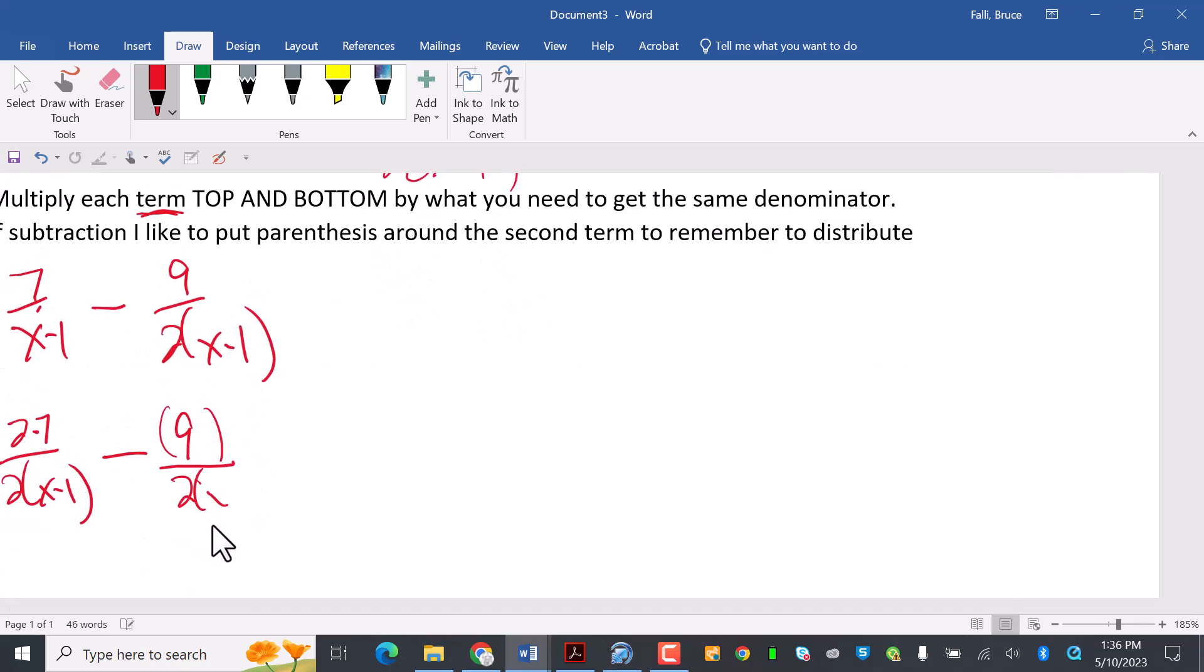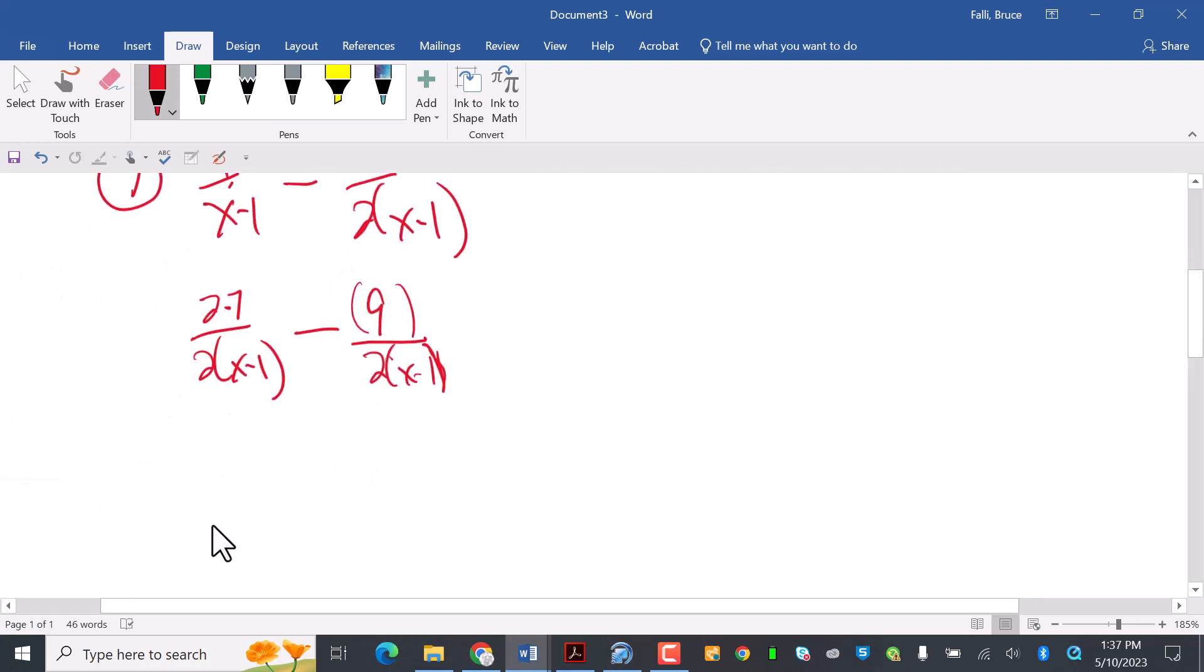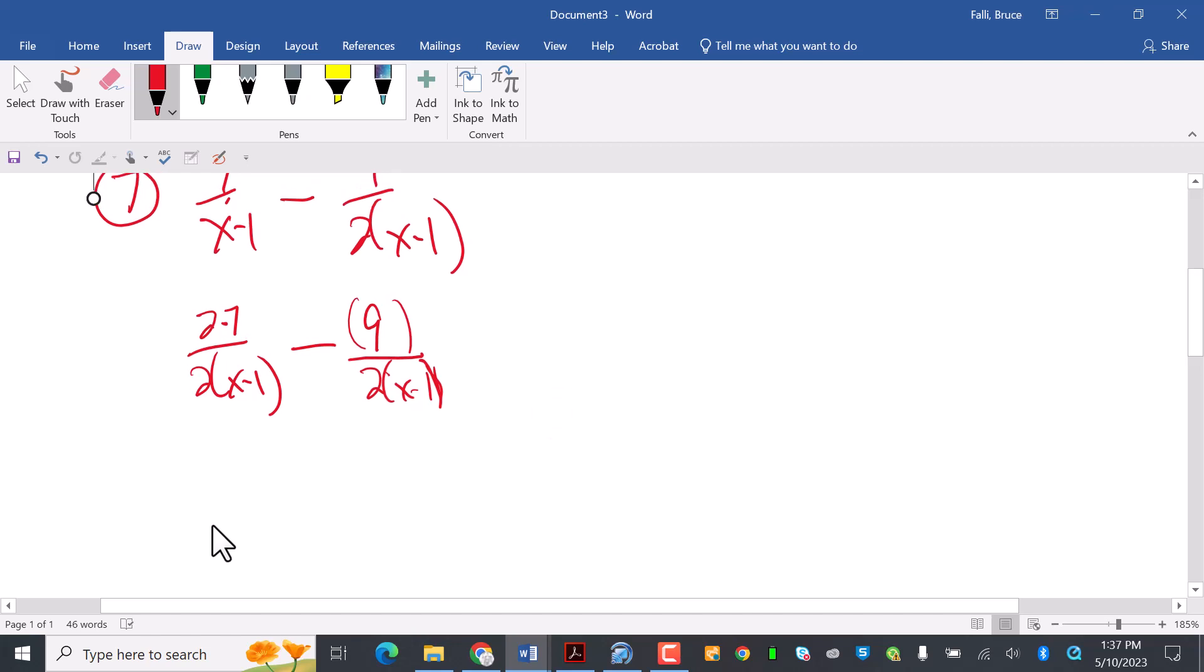This is going to be 2x minus 1. So now that my denominator is the same, I just kind of make that line. So two times seven is fourteen minus nine. And then that whole line goes in there, 2x minus 1. So fourteen minus nine is five. So it's 5 over 2x minus 1. That's number seven.